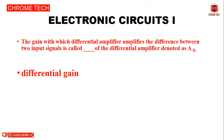Next question: The gain with which a differential amplifier amplifies the difference between two input signals is called dash of the differential amplifier, denoted as AD. The answer is differential gain.